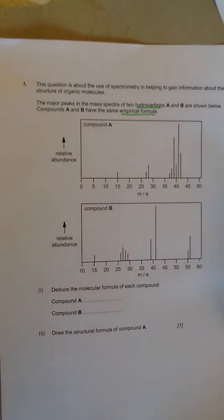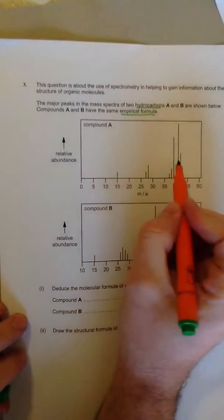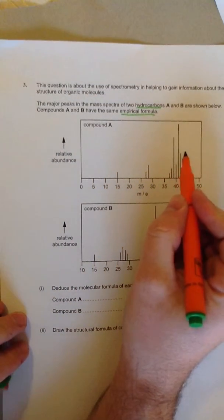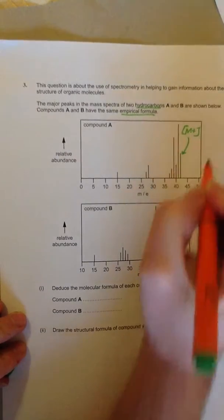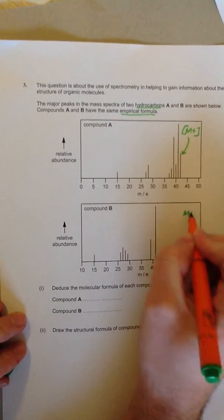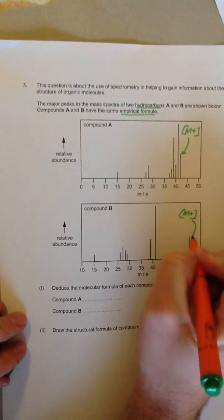Well, remember we look at the peak that's furthest to the right in each spectrum. That's the M plus ion, and the M plus ion tells us the molecular mass of the compound.